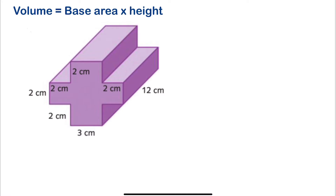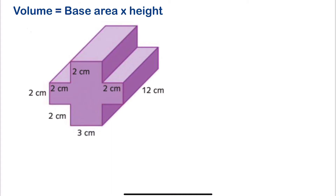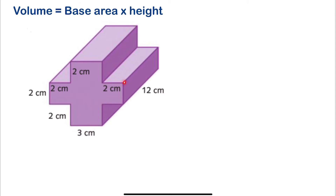Firstly, we need to identify the base. The base is the shape that is identical — the face in front and behind will be the same, so this plus-shaped face is going to be our base. This is where we calculate the base area, then multiply by the height. The height of this prism is 12 — this distance is 12 everywhere.